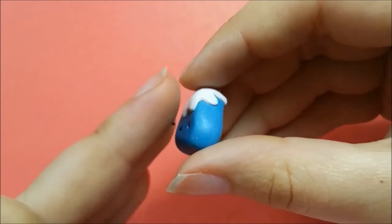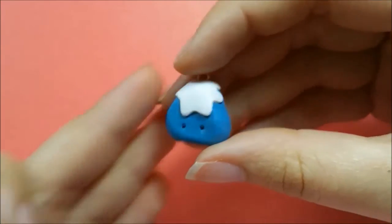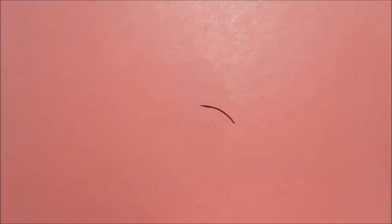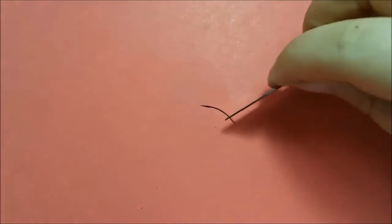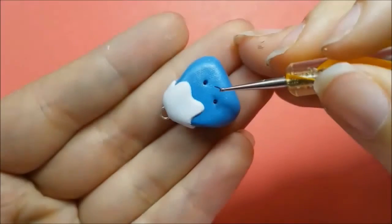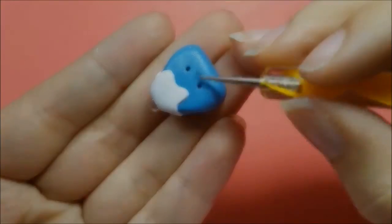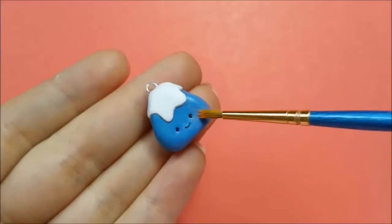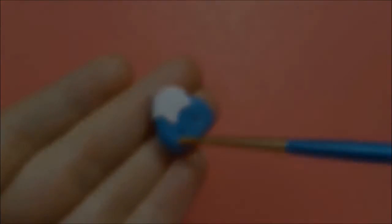Roll out the rest of the snake slightly thinner and cut out a small section to be the mouth. Add on to the face and dust on some pink chalk pastel for blush.